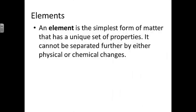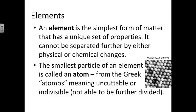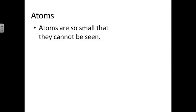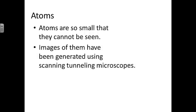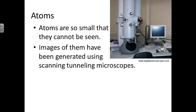An element is the simplest form of matter that has a unique set of properties. It cannot be separated further by physical or chemical changes. The smallest particle of an element is known as an atom, from the Greek word atomos, meaning uncuttable or indivisible. We see a picture here of individual atoms arranged in a very regular pattern.